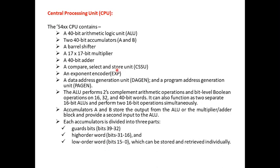The central processing unit consists of: a 16-bit ALU, two 40-bit accumulators, a barrel shifter, a 17×17-bit multiplier, a 40-bit adder, a compare-select-and-store unit, an exponent encoder, an address generation unit (DAGN), and a program generation unit (PAGN). The ALU performs two's complement arithmetic operations as well as bit-level Boolean operations on 16-bit, 32-bit, and 40-bit words.